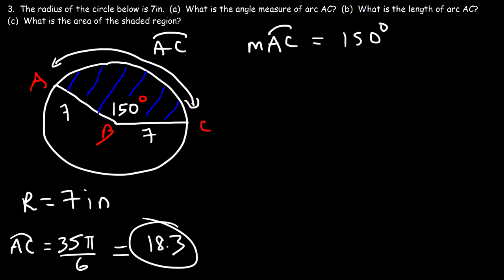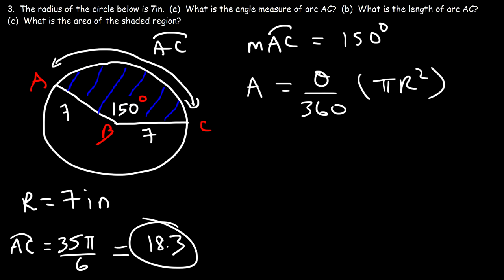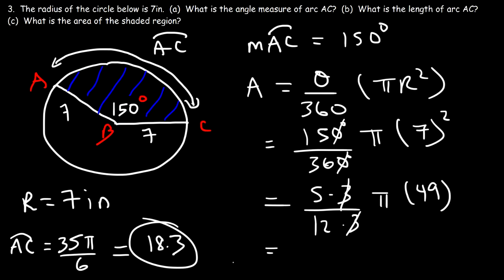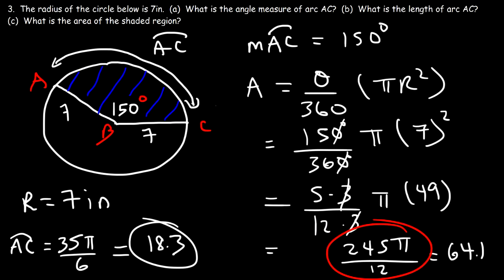Now calculate the area of the shaded sector. The formula is theta over 360 times π r squared. With theta equal to 150 and r equal to 7, that's 150 over 360 times π times 49. Canceling: 15 over 36 reduces using common factor 3 to 5 over 12, times 49. So the area is 245π over 12, which is approximately 64.1 square units.